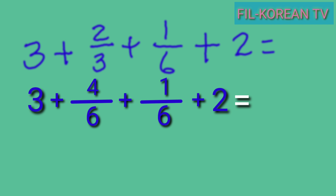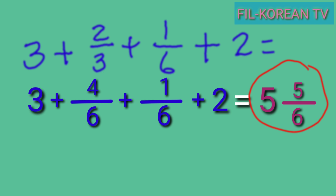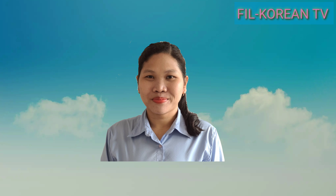Add the whole numbers: three plus two equals five. Add the numerators: four plus one equals five, and copy the LCD six. The answer is five and five sixths. I hope you learned from this video. See you next time, God bless.